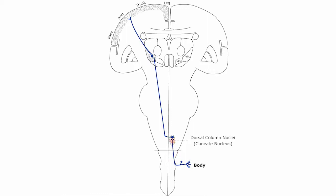The second pathway for sensation from the body, the dorsal column medial lemniscus pathway, has a very similar pattern and trajectory except for one very important difference. The first neuron, the one with the cell body in the dorsal root ganglion, does not cross immediately, but ascends on the same side of the spinal cord to the posterior part of the medulla. There it meets neuron number two and crosses to ascend to the thalamus on the opposite side.